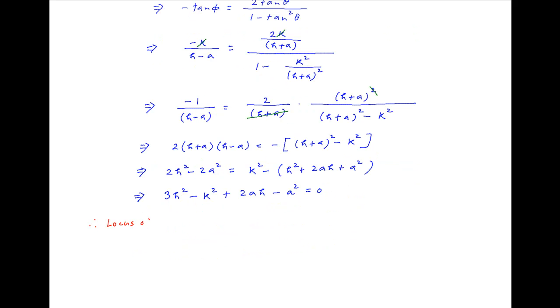The locus of the vertex P with coordinates (h,k) is obtained by replacing h with x and k with y in the above equation. Therefore the locus of P is 3x squared minus y squared plus 2ax minus a squared is equal to 0, which is the required answer.